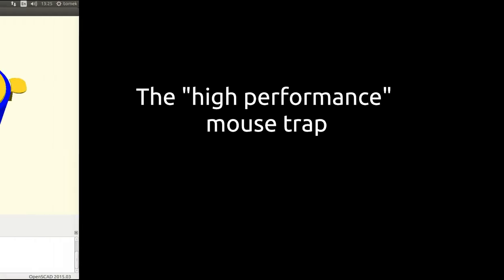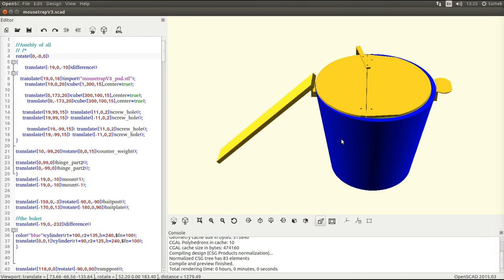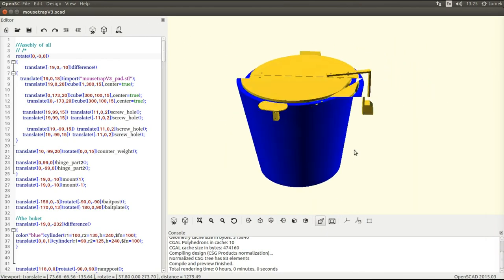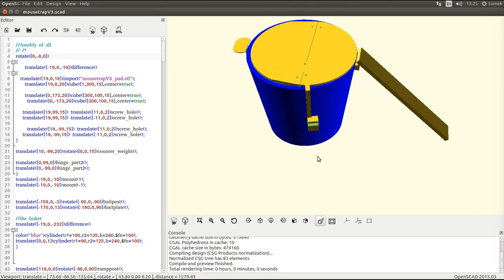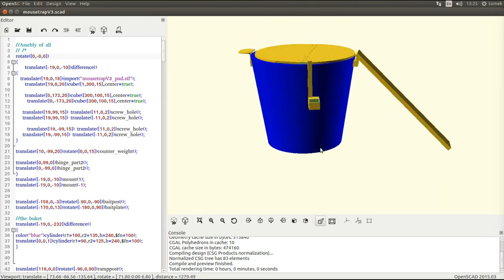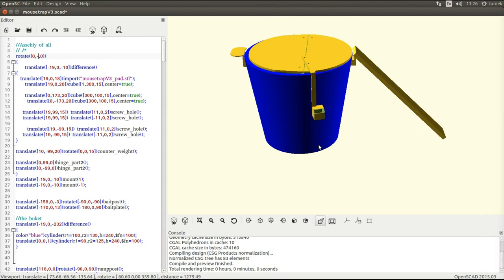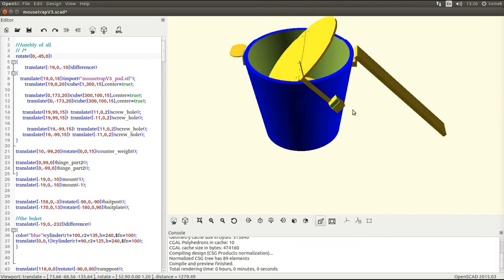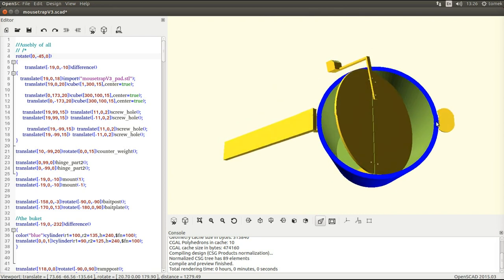Hello, this is Thomas for the assembly video of the mousetrap. I tried to minimize the 3D printed parts in the design and also the size of the parts. Just use things around the house like a bucket and a piece of wood.